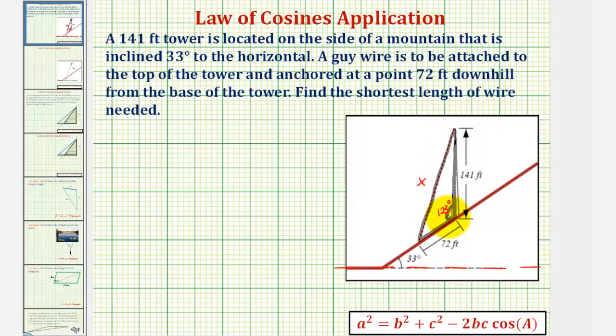And sides b and c would be the two sides that form the known angle. So applying the law of cosines to our obtuse triangle, we would have x squared equals 72 squared plus 141 squared, and then minus 2 times 72 times 141 times cosine of the angle formed by the two sides we know the length of, which is our angle, 123 degrees. So we'd have x squared equals, and now we'll go to the calculator to evaluate the right side.